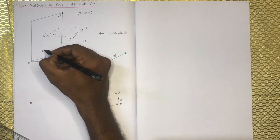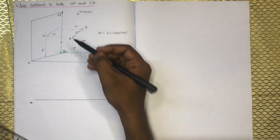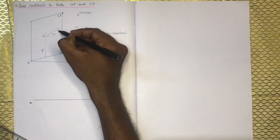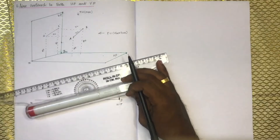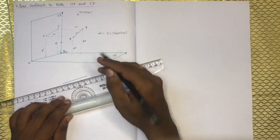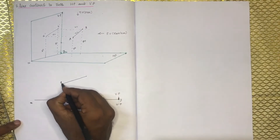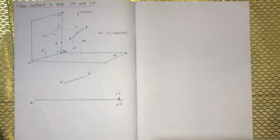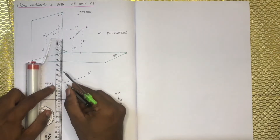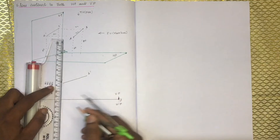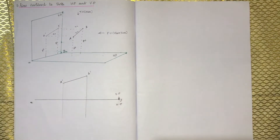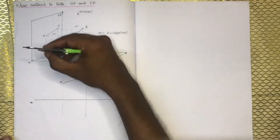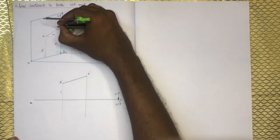Point A will be 50mm above the XY line. You can see that B is 70mm. Mark the A and B locations on the light lines. For A, it is a light line; for B, it is a light line. The height of A is 50 and the height of B is 70.